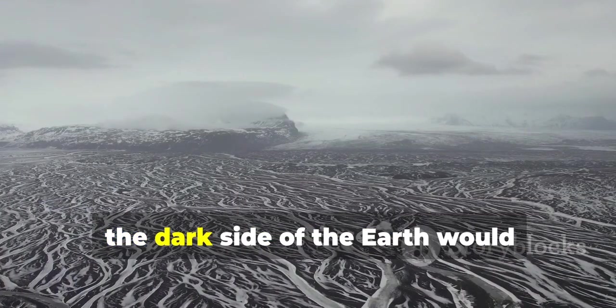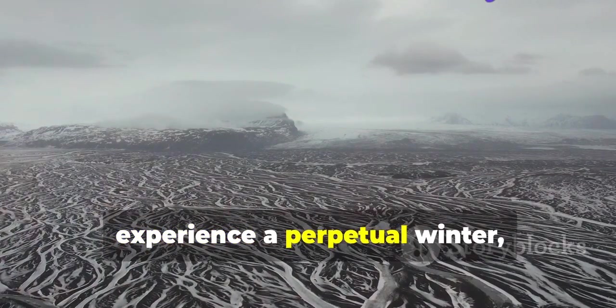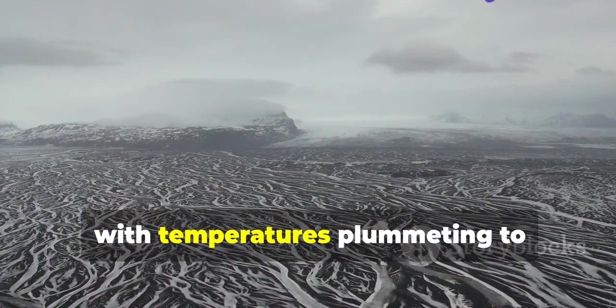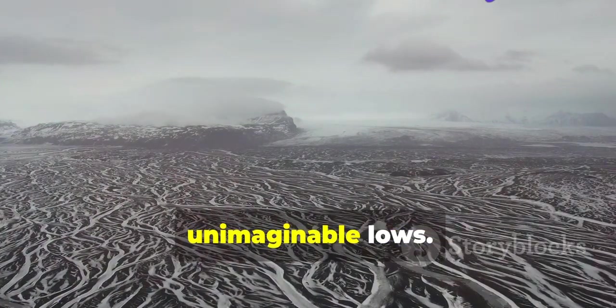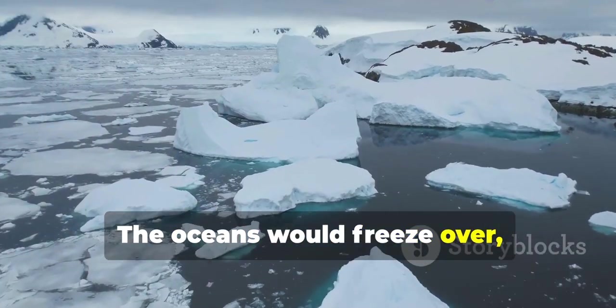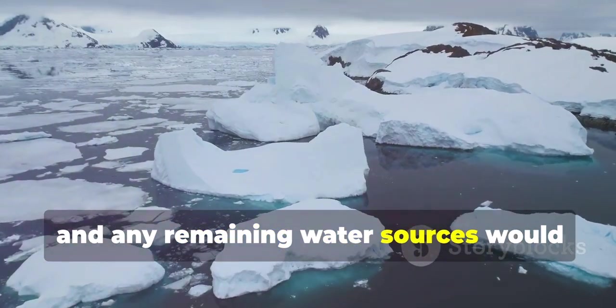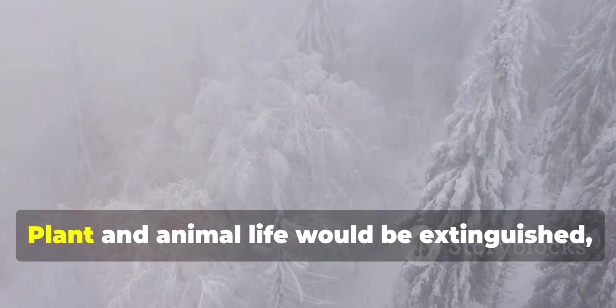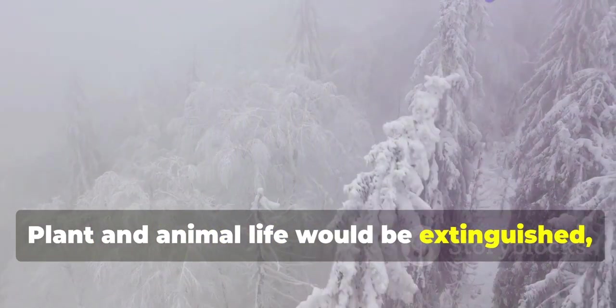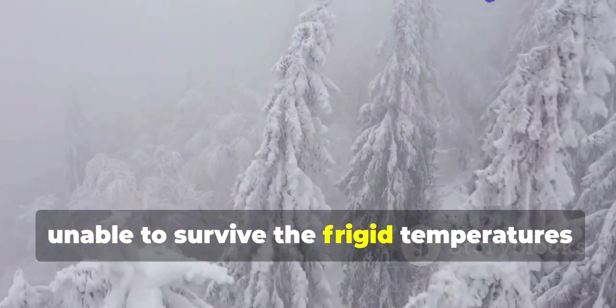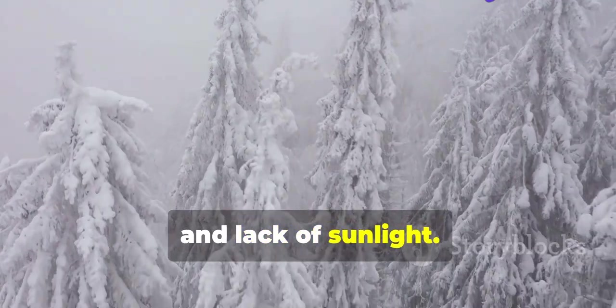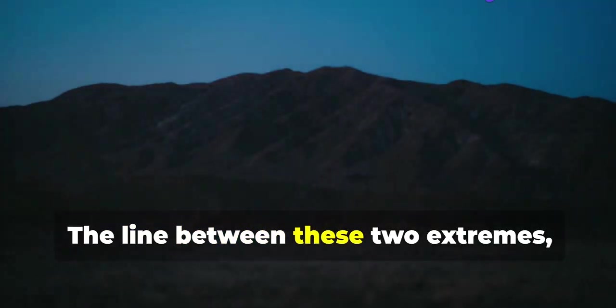Meanwhile, the dark side of the Earth would experience a perpetual winter, with temperatures plummeting to unimaginable lows. The oceans would freeze over, and any remaining water sources would turn to ice. Plant and animal life would be extinguished, unable to survive the frigid temperatures and lack of sunlight.